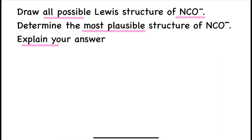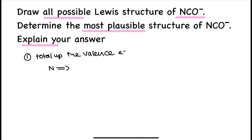The first step to determine the Lewis structure would be to total up the valence electrons of all atoms present in the molecule. Nitrogen has a valence electron of 5, carbon has a valence electron of 4, while oxygen has a valence electron of 6. This would sum up to 15 electrons.